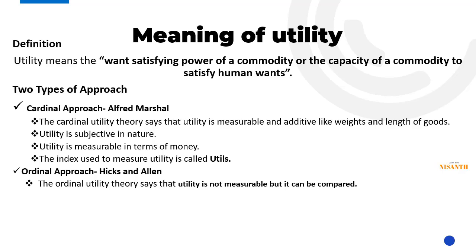For example, if you consume a product, the first unit gives you satisfaction, the second unit gives you satisfaction, and the third unit gives you satisfaction. In the ordinal approach, the first unit gives the highest satisfaction — so it gets the first rank, the second unit gets the second rank, and so on. This is exactly how the ordinal approach works — not measuring exactly but making comparisons.